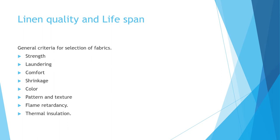Regarding linen quality and lifespan, the first selection criterion is strength. The warps and wefts — horizontal and vertical threads — must be tight so the fabric does not tear easily. The expected shelf life of a bed sheet in a five-star hotel is six years. During laundering, fabrics are expected not to tear easily, as staff are trained to handle linen with care and use non-harsh chemicals.